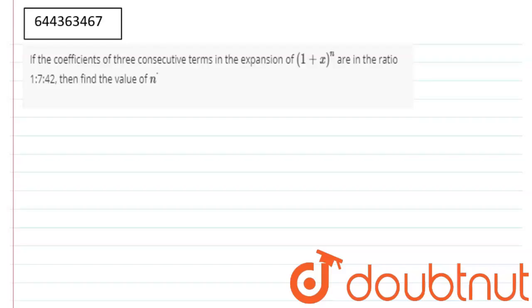Hey guys, we are given a question: if coefficients of three consecutive terms in the expansion of (1+x)^n are in the ratio 1:7:42, then find the value of n.